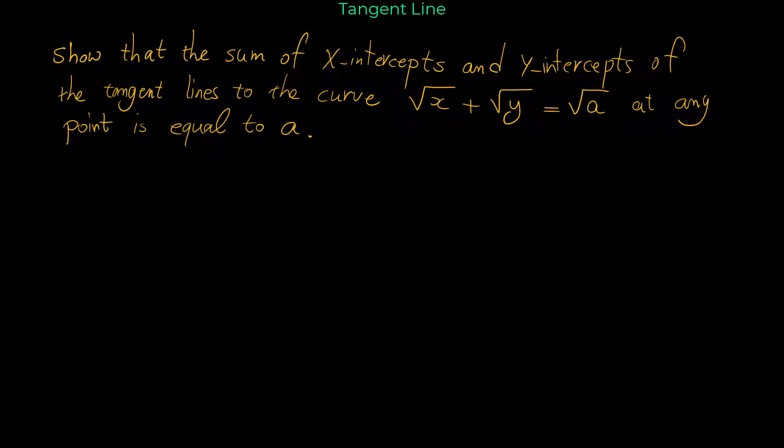So we want to prove that for any tangent line to this curve, the sum of x-intercepts and y-intercepts is equal to a. First we have to find the equation of the tangent line. For that, we need the slope of the tangent line, and for finding the slope we have to find y-prime or dy/dx.